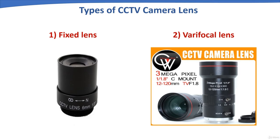In a varifocal type of CCTV lens, the focal length can be adjusted depending on the varifocal lens size. For example, a varifocal lens may be labeled 12 to 120mm, meaning the lens size can vary from 12mm to 120mm.